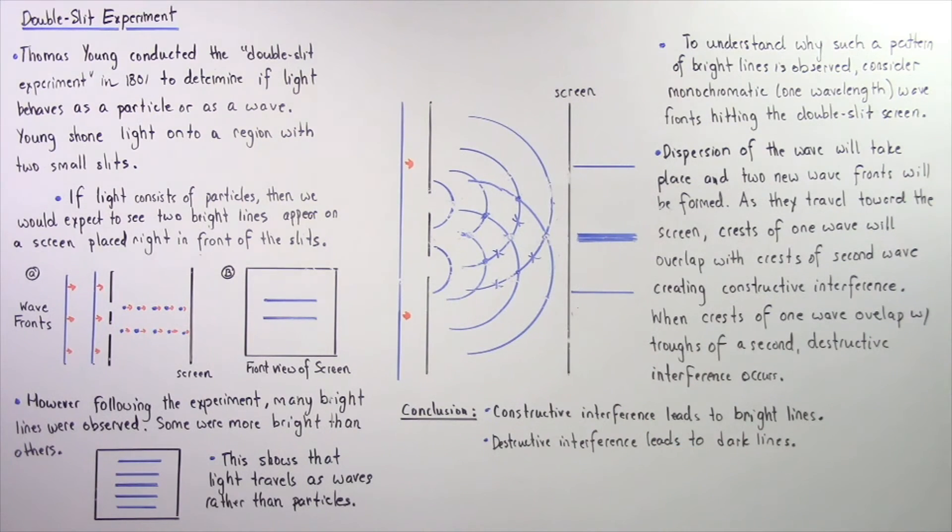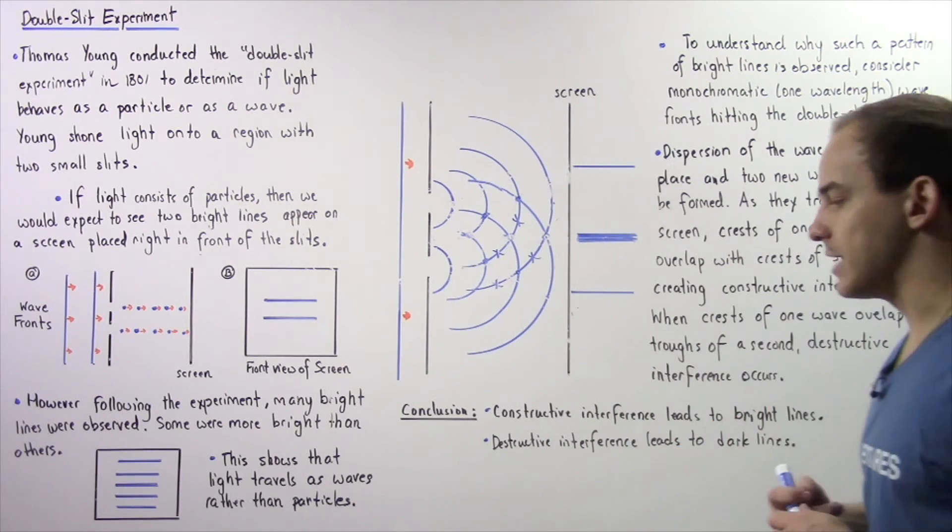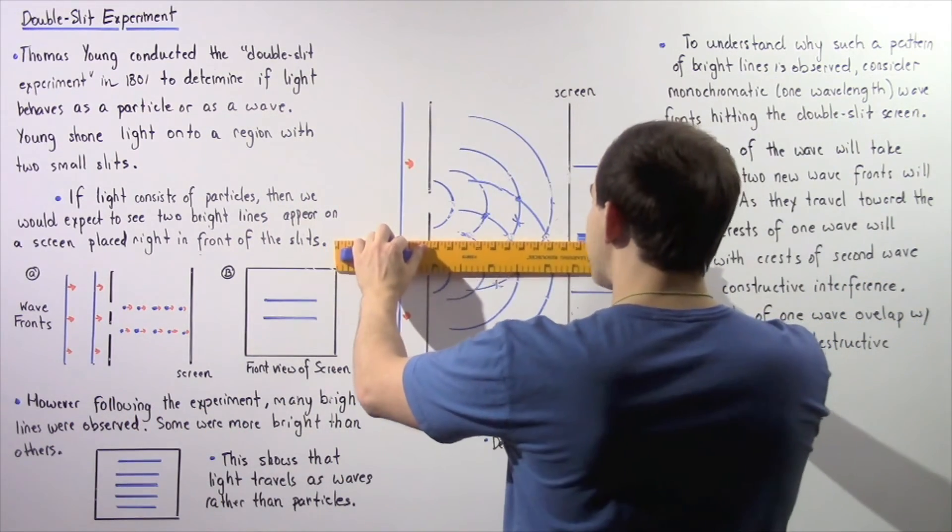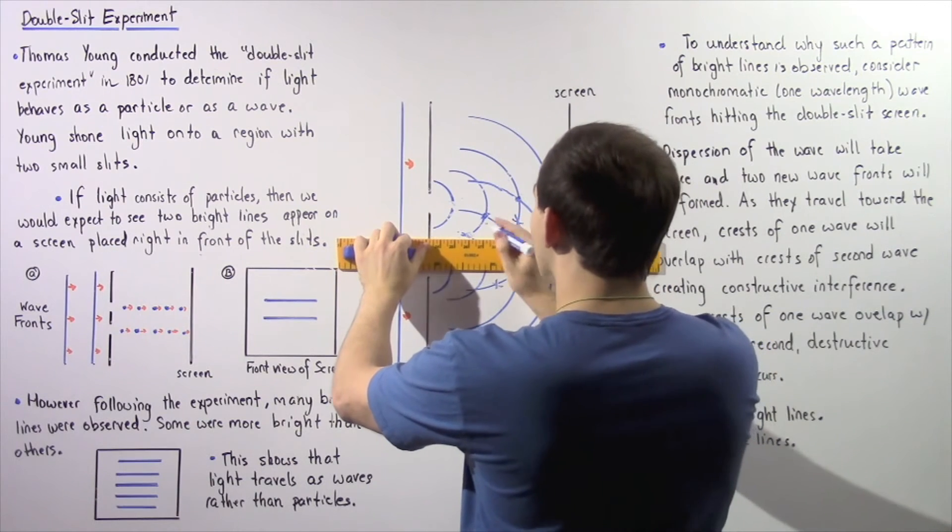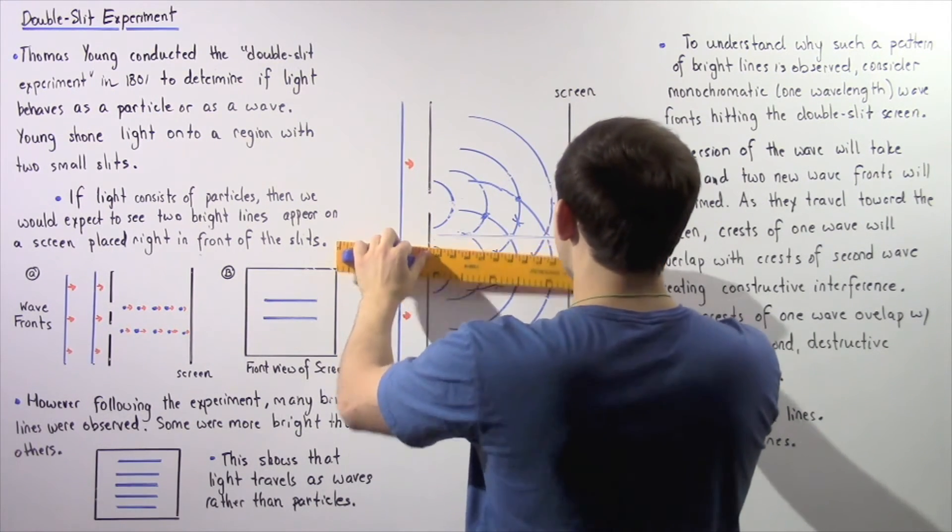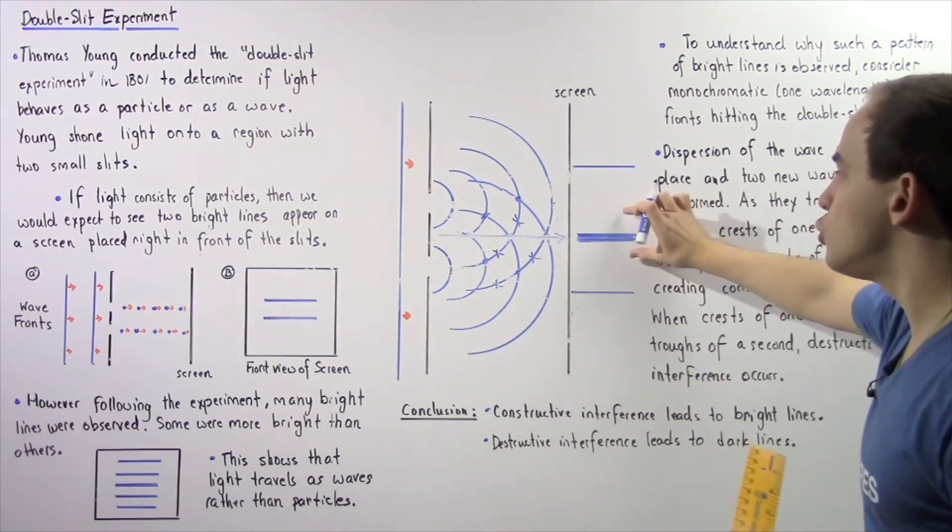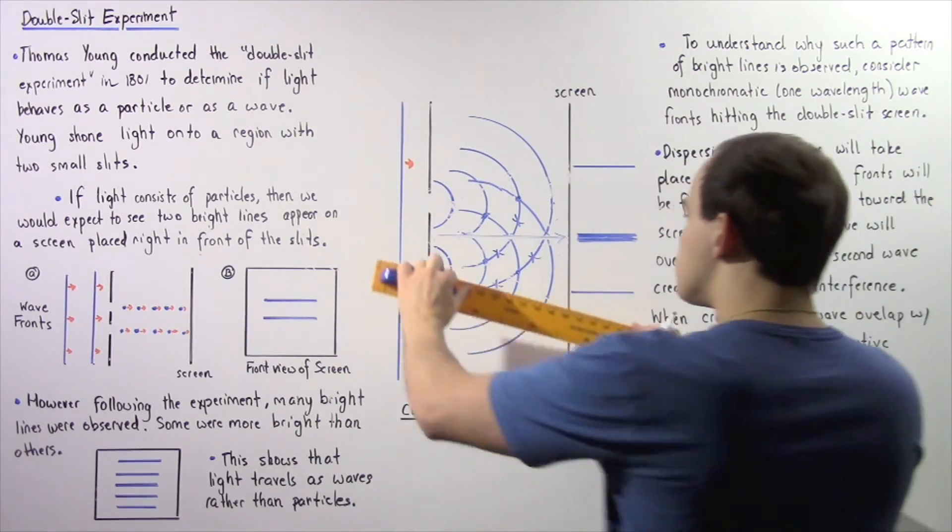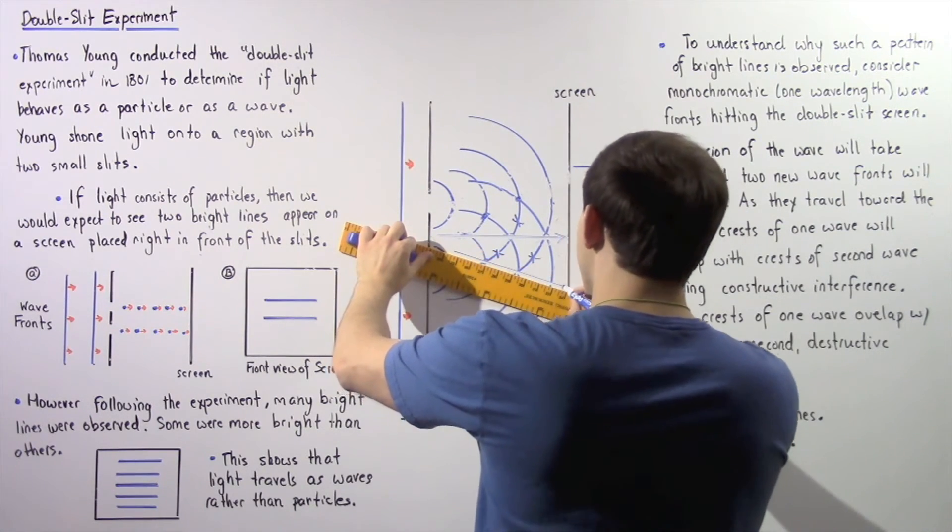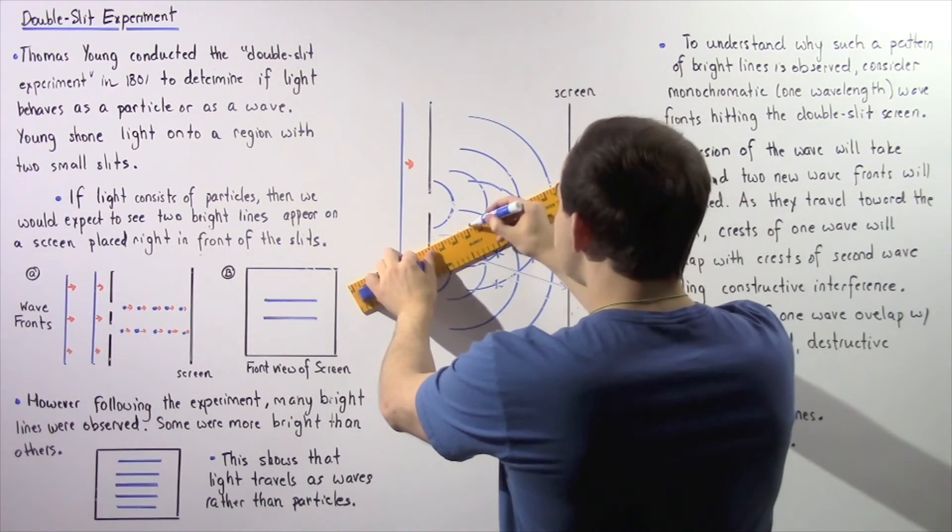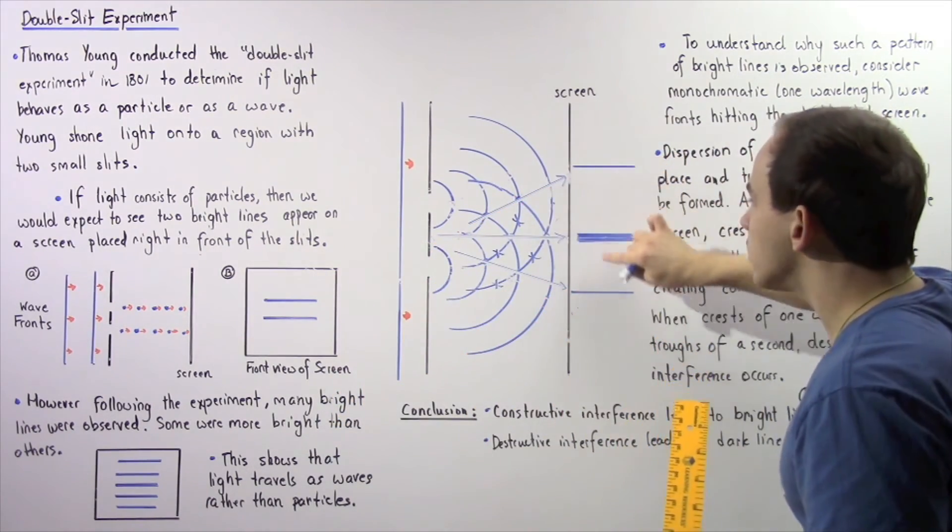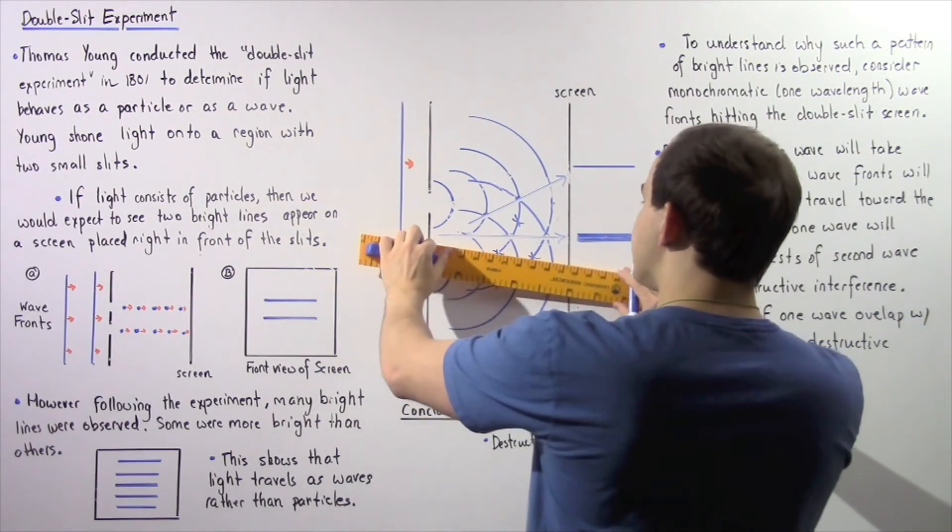Now constructive interference leads to bright lines, while destructive interference leads to dark lines. So if we essentially take a ruler and we draw a straight line through the regions of constructive interference, that line will essentially lead to our bright line. So we can do the same exact thing with these points of intersection.